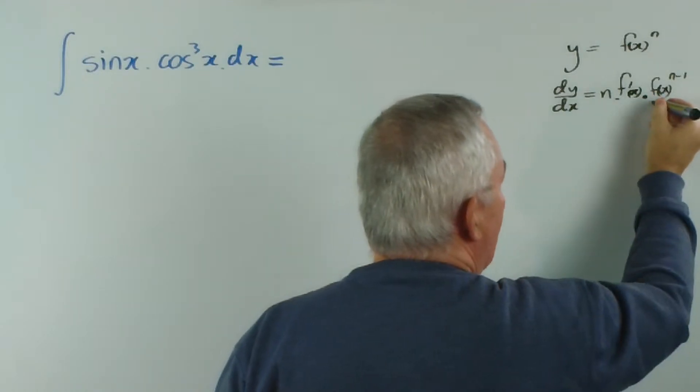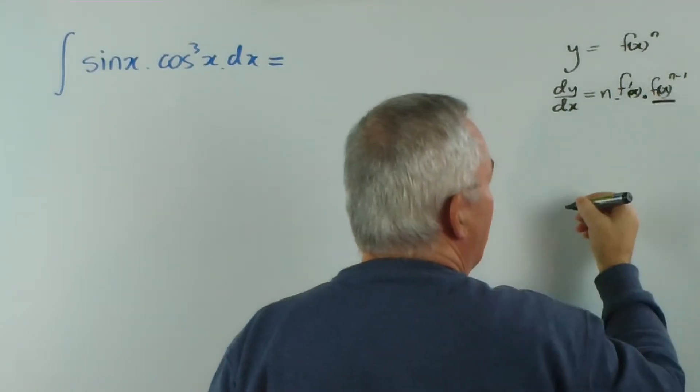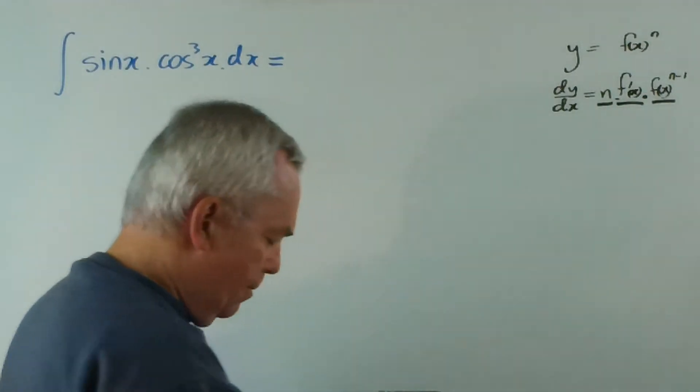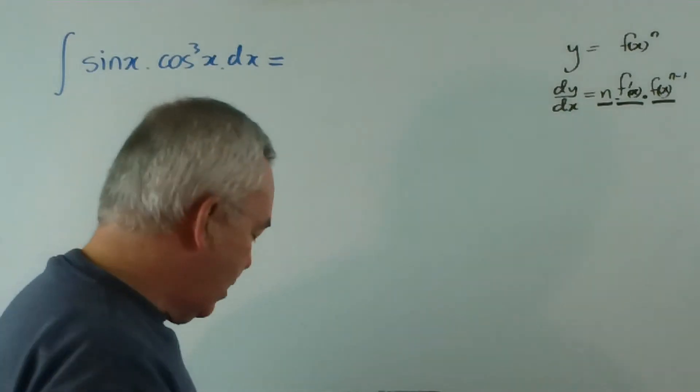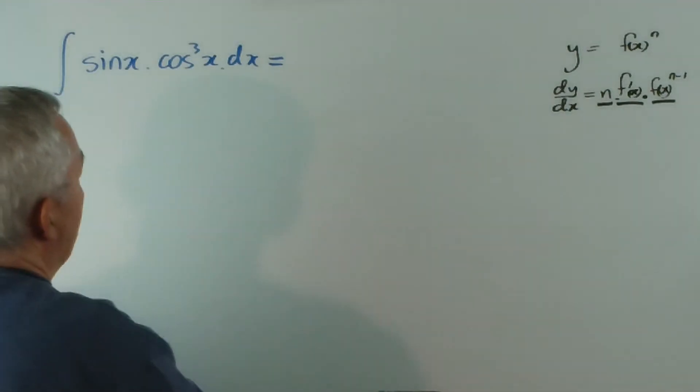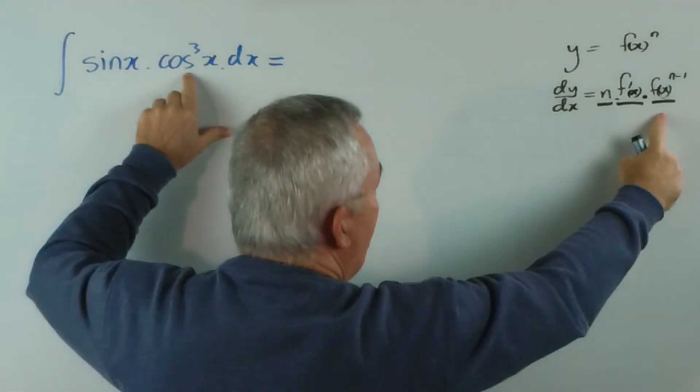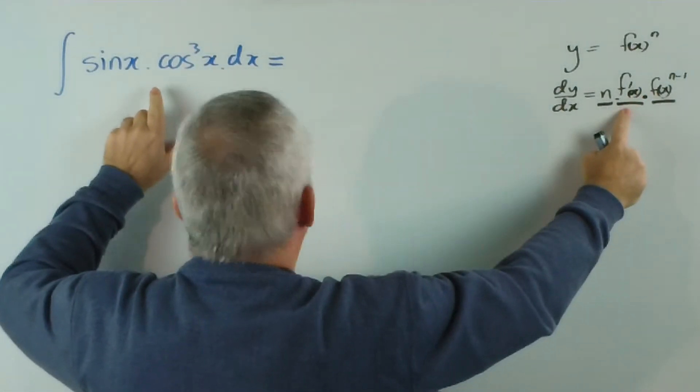So we're looking for this pattern where we have a function to a power, its derivative in front, and some number. That's if we're trying to match this exactly. So what do we have here? We have a function to a power. We have its derivative.